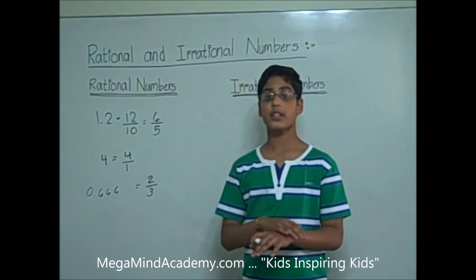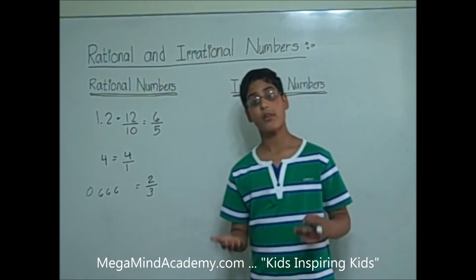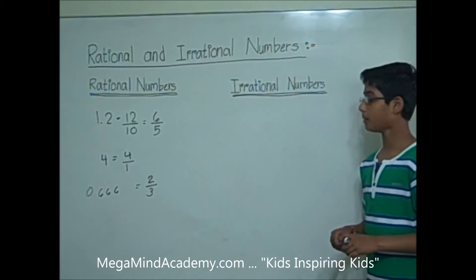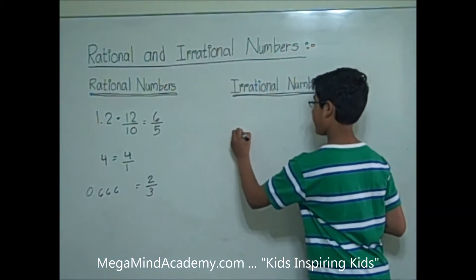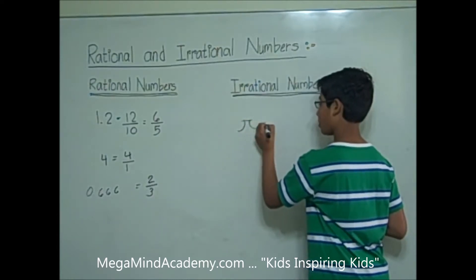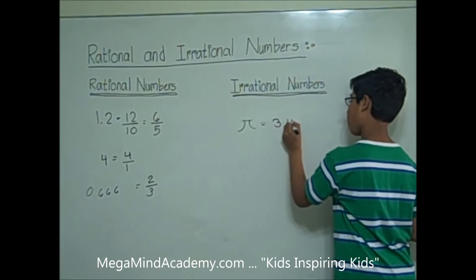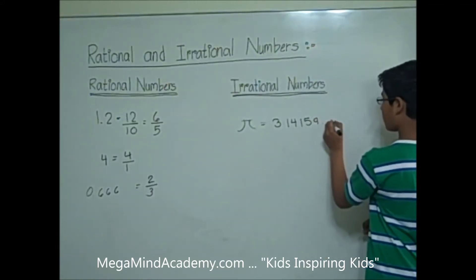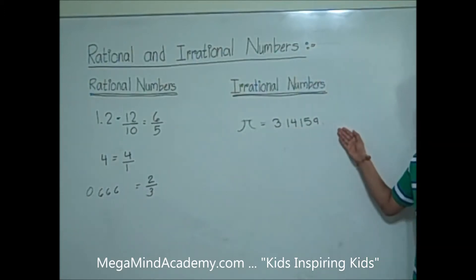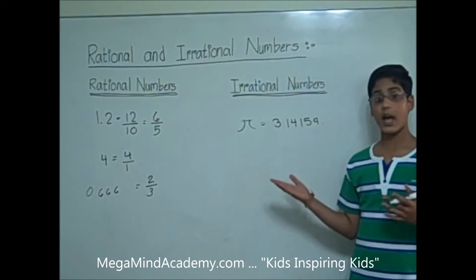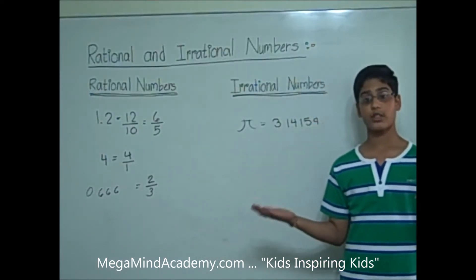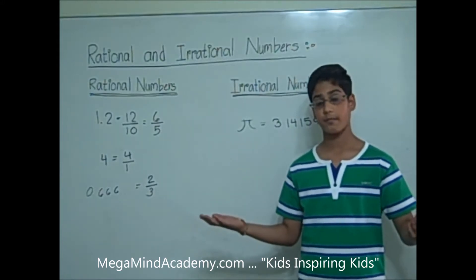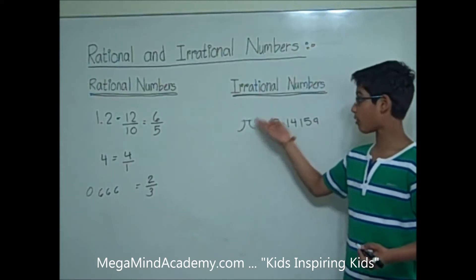Irrational numbers are the numbers that cannot be written as a simple fraction or the ratio of two integers. For example, pi is an irrational number. Pi is equal to 3.14159... This number cannot be put into a simple fraction because it never ends and does not have a repeating pattern. So pi is an irrational number.